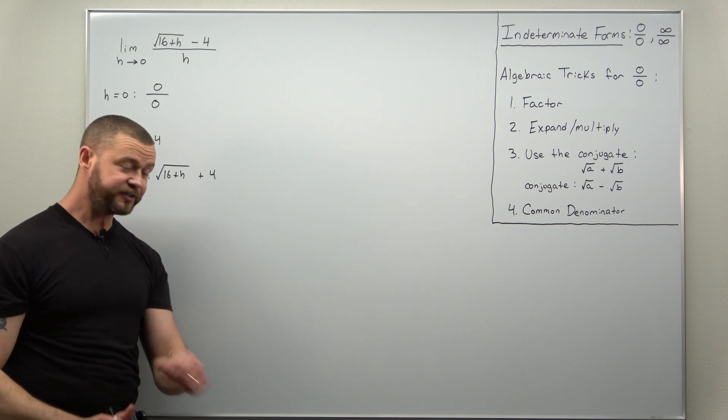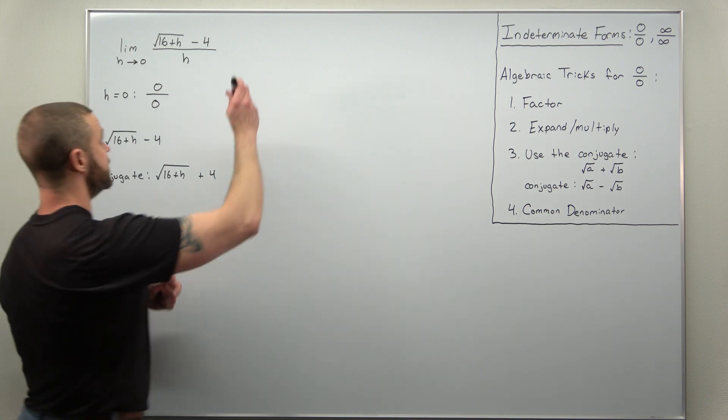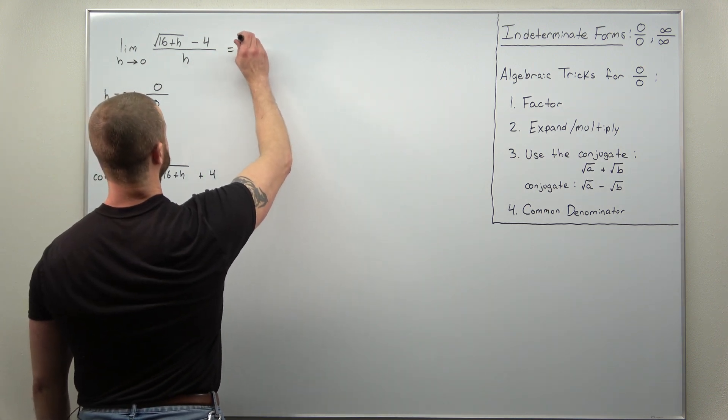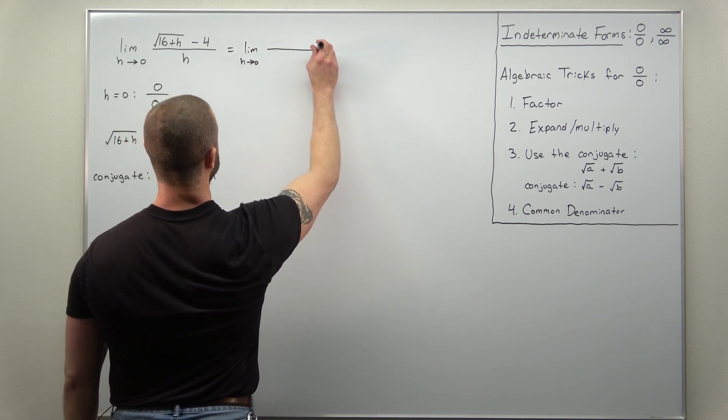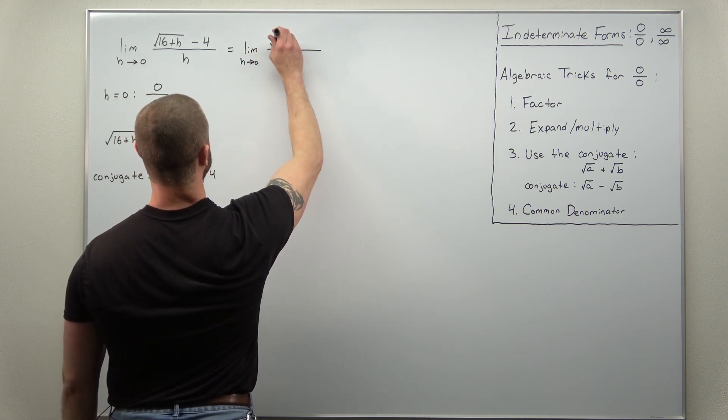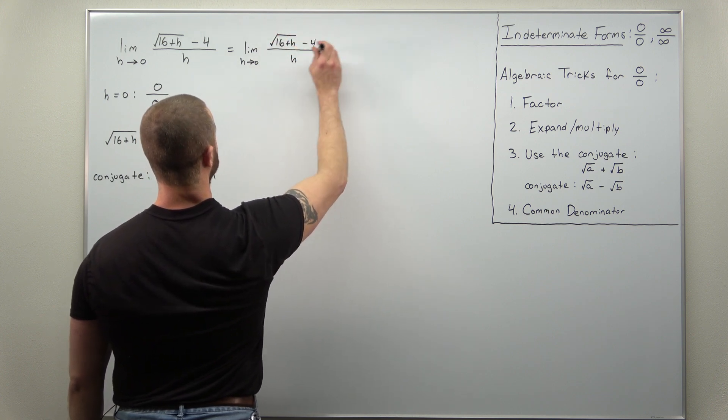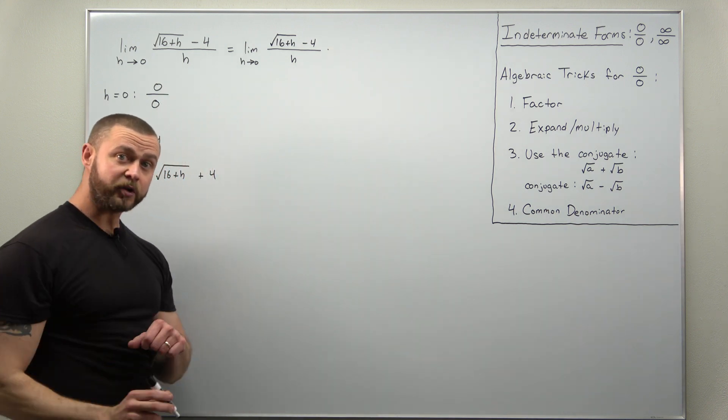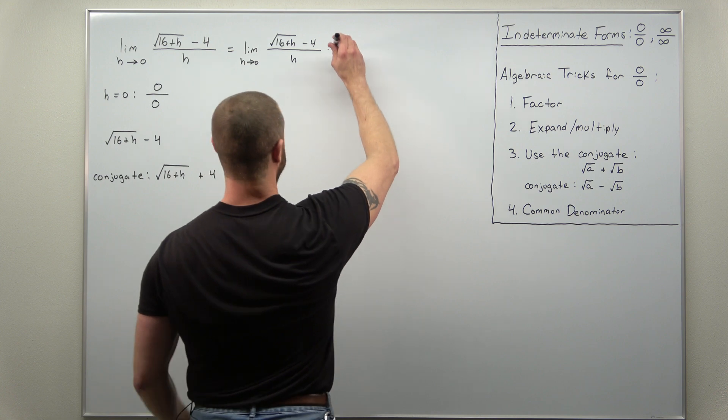Alright, so our first step, we're going to multiply the numerator and denominator by the conjugate here. So let's write that out. We keep h approaches 0. We're going to keep the original function here. And now we're going to multiply the numerator by the conjugate, and we're going to multiply the denominator by the conjugate.